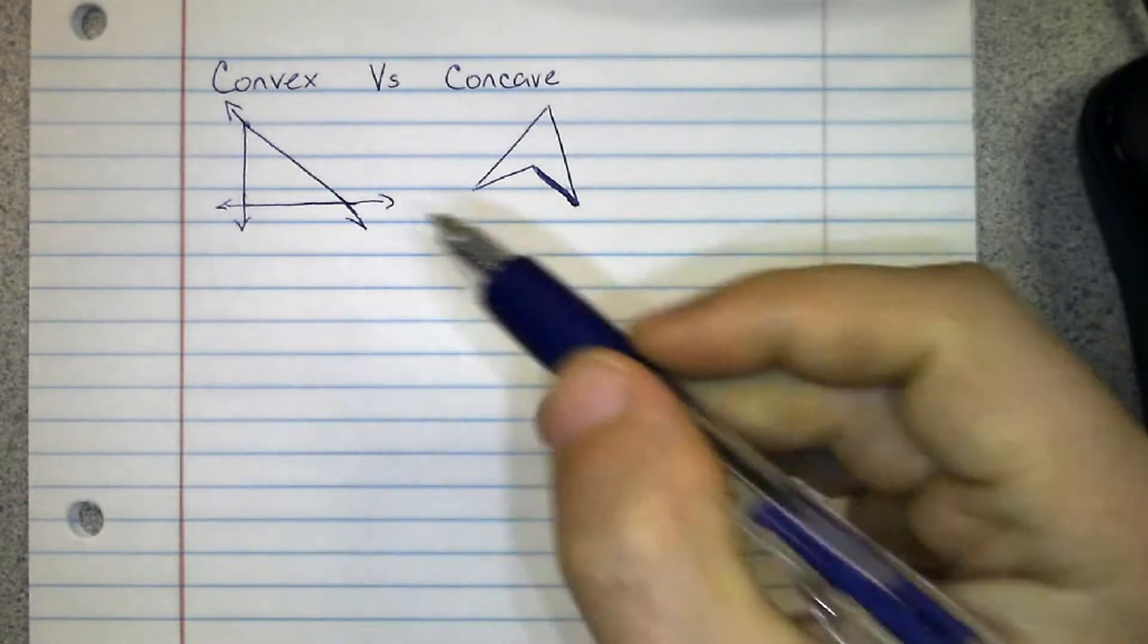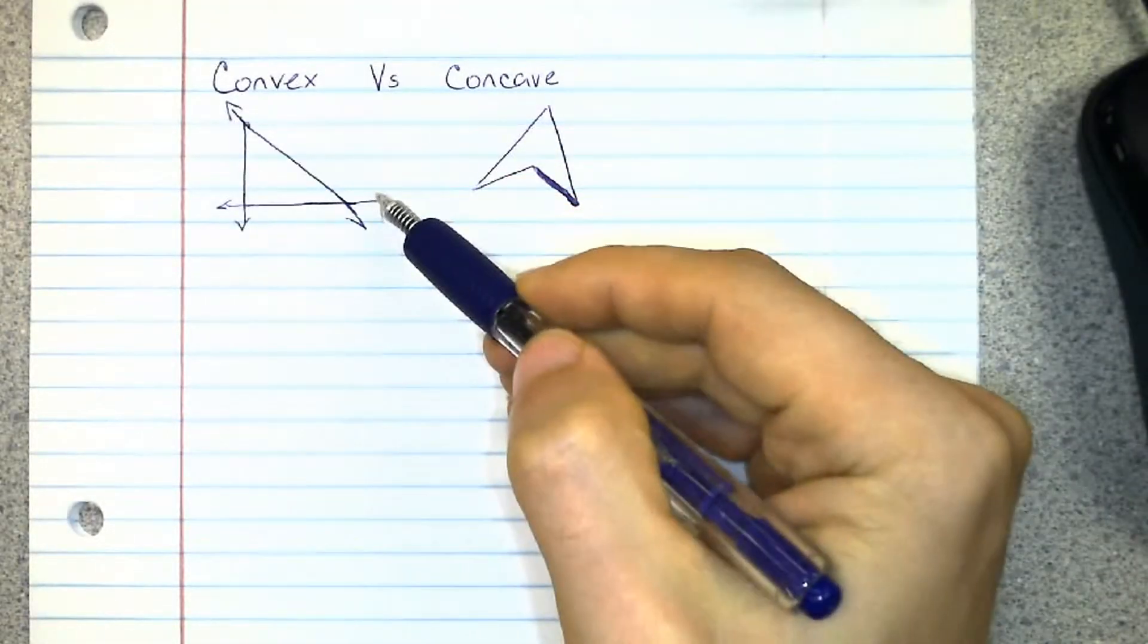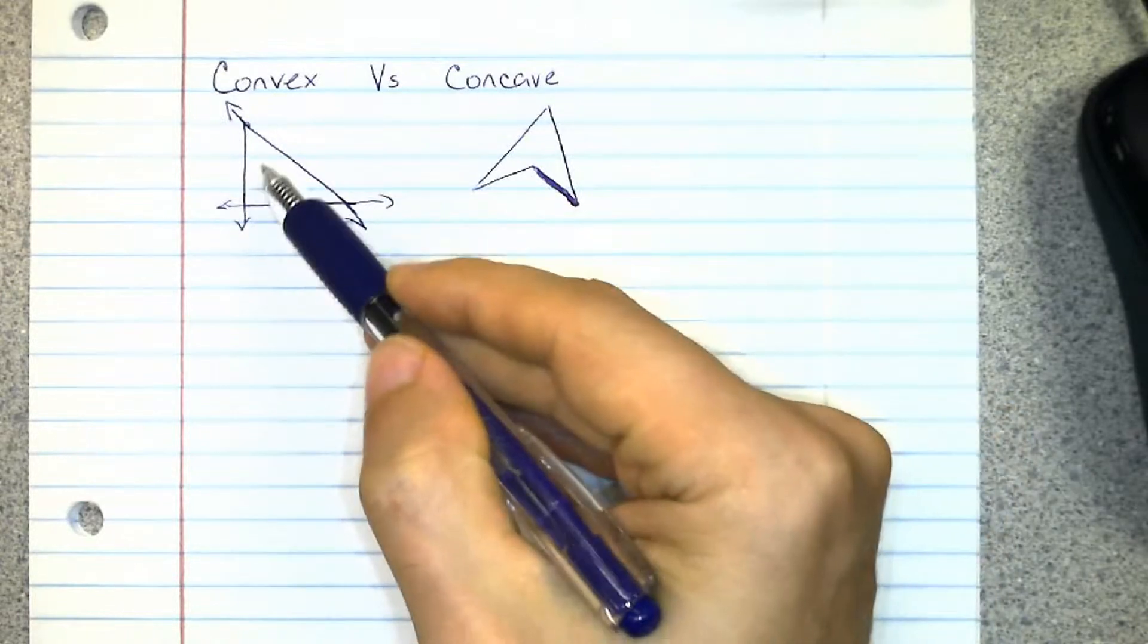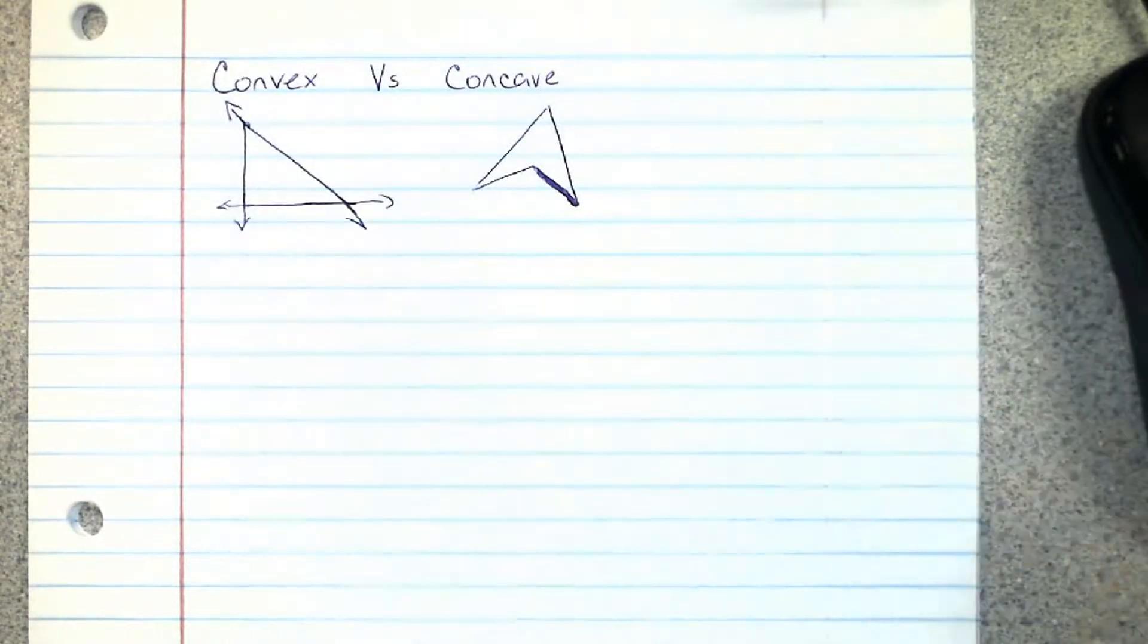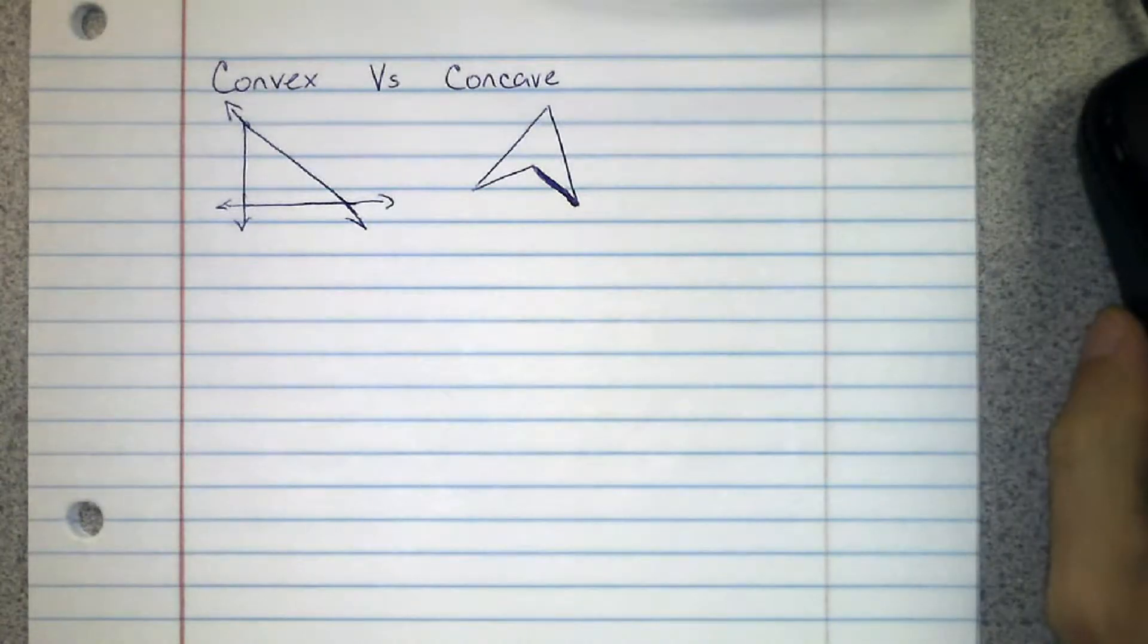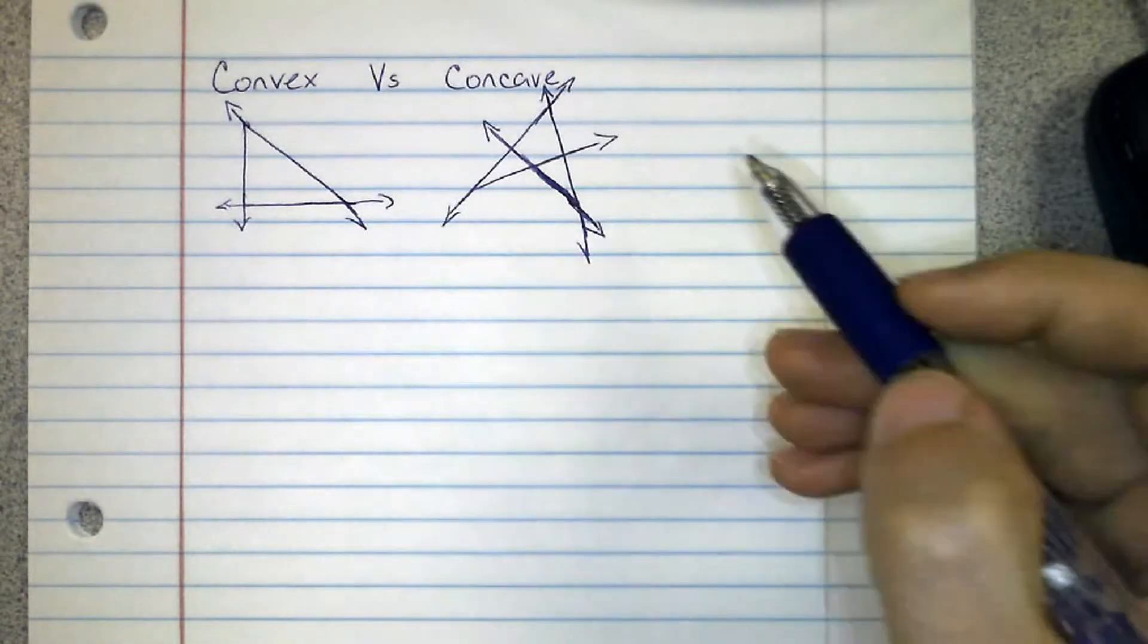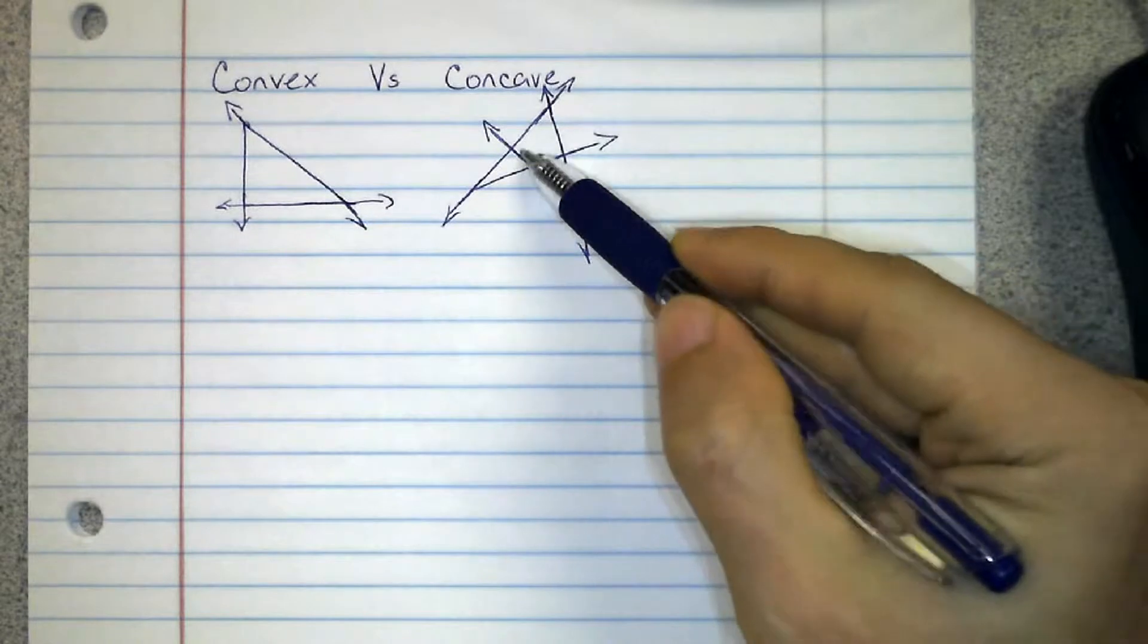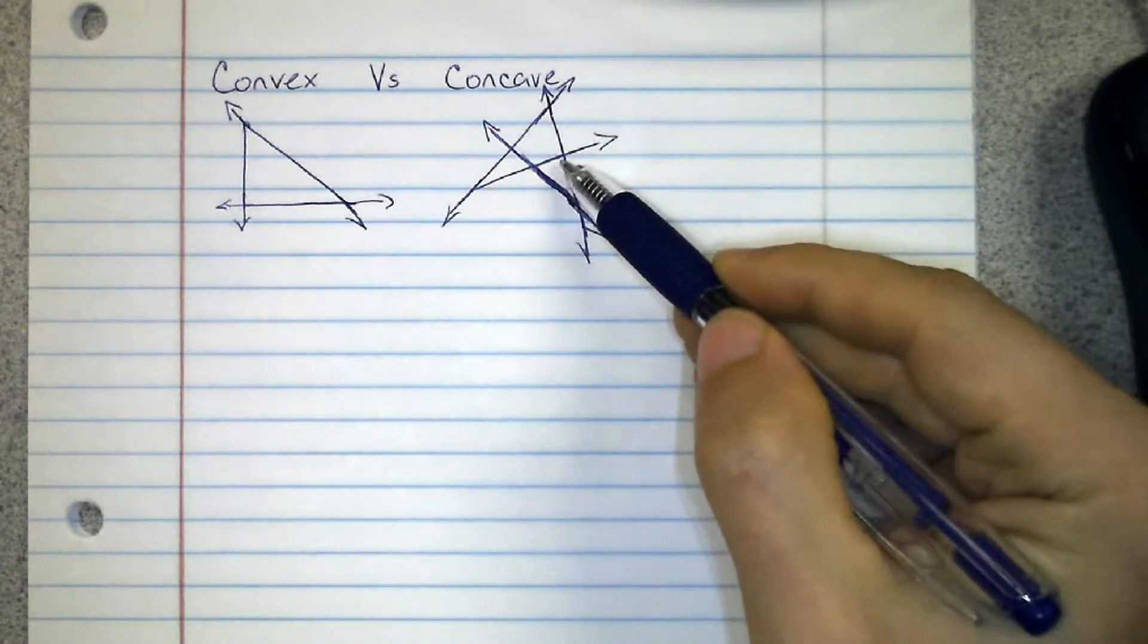With the convex polygon, notice that when I extended these lines they didn't actually cut across the inside of the shape. Let's take a look at the concave polygon.